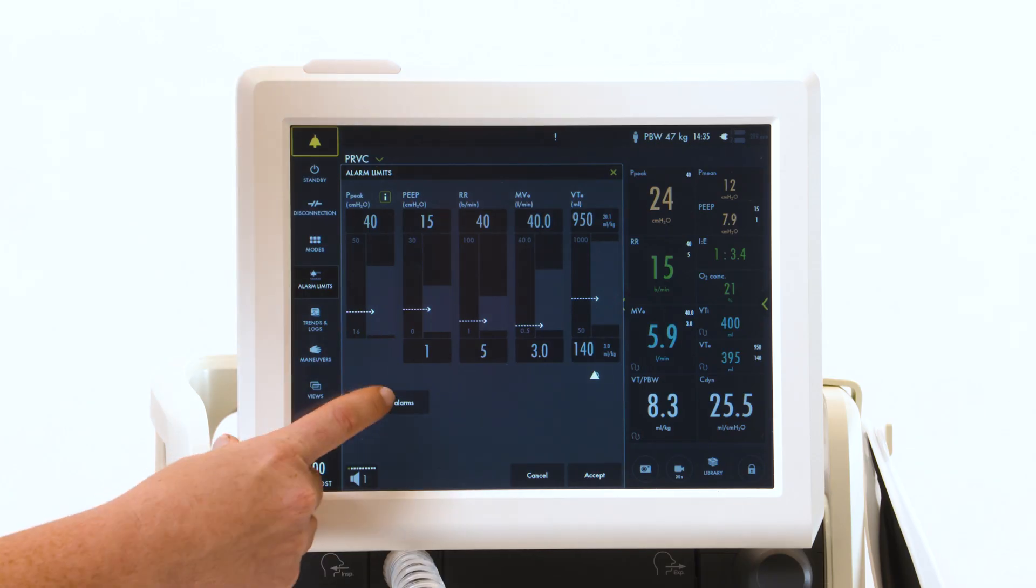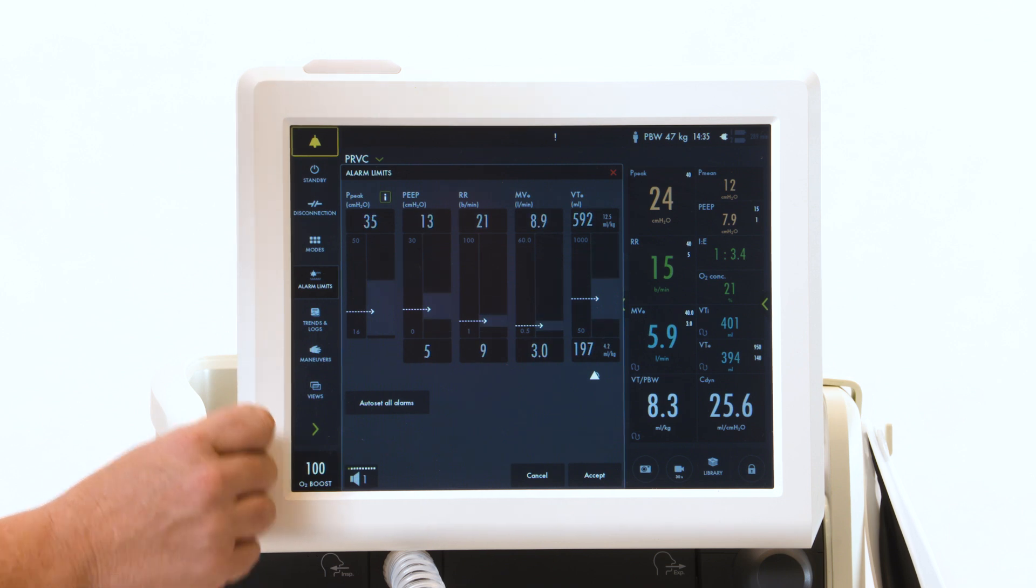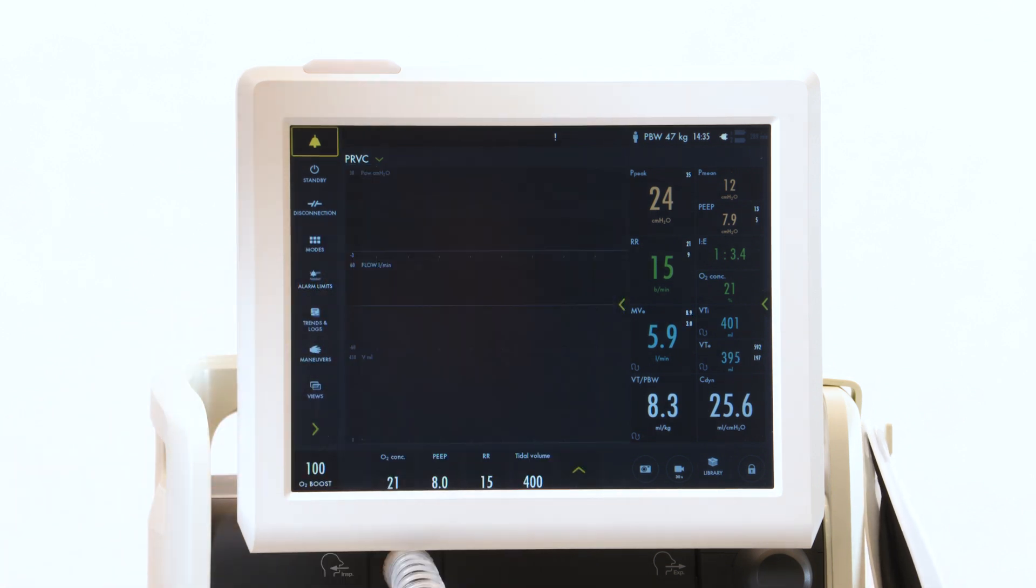There is also an auto set feature available in control modes of ventilation for the alarms. They will set the upper and lower alarm limits based on what your patient is currently doing. It is located here and the ventilator will make the adjustment. If you're happy, you then hit accept.